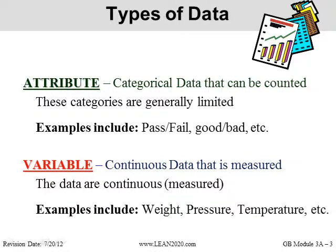You've seen this as part of the white belt, but it's important enough where we want to re-emphasize it here. There are two types of data. You have attribute data, which is what we consider categorical data — pass, fail, good, bad, different types of defects, maybe different diagnoses. So anything that we're going to break into different categories, causes of issues, would be an attribute type of data.